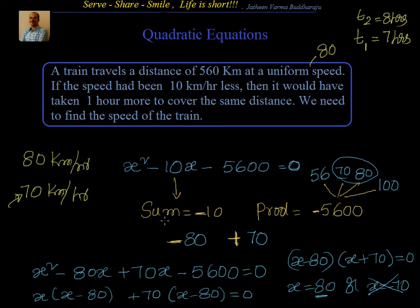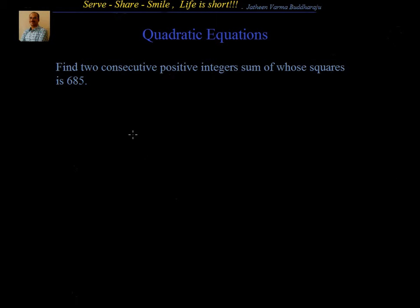Now let's continue with a couple of examples where we will form the quadratic equation and solve it using factorization, splitting the middle term. Let's try to solve this problem. Find two consecutive positive integers, sum of whose squares is 685. We will start by letting those positive integers be x and x plus 1, because consecutive means difference is 1.